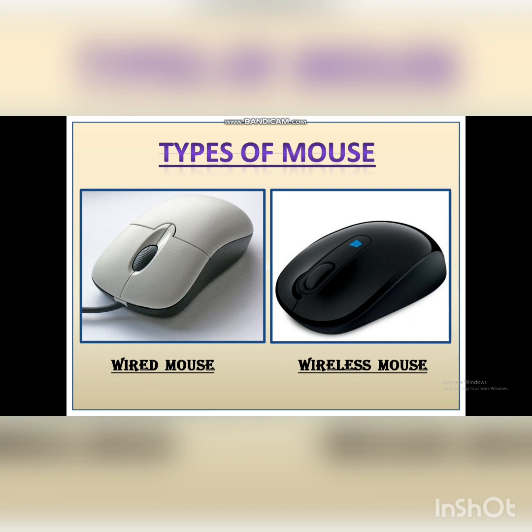Number 1: Wired mouse. A wired mouse has a long tail — a long wire which is connected to the CPU in order to work. Now you can see that there are 2 buttons: left and right button, and also a scroll wheel.